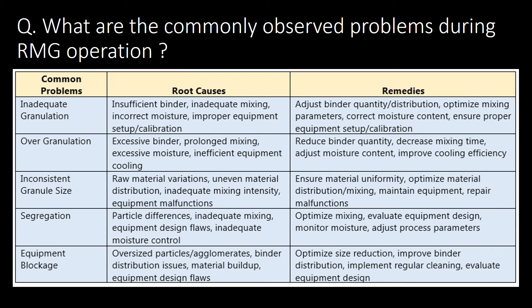This is a very important question: what are the commonly observed problems during RMG operation? You can refer to the table below for commonly observed problems, their root causes and remedies. The very commonly observed problems during RMG operation are inadequate mixing or granulation, overgranulation, inconsistent granule size, segregation, and equipment blockage.